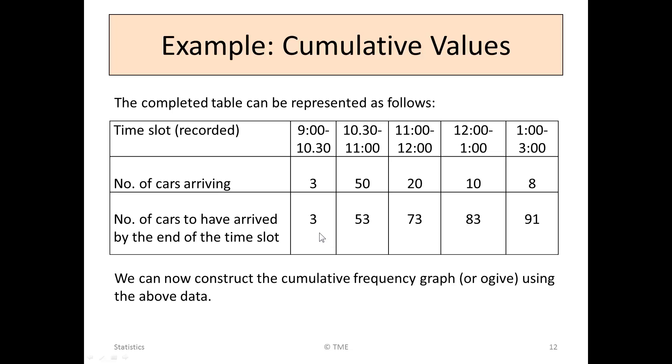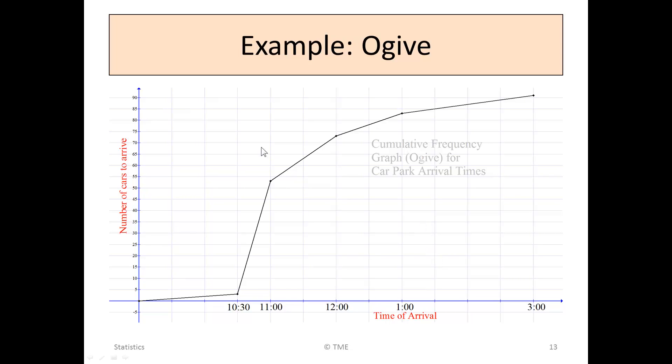Just to note the numbers. By 10:30, we have 3 cars. By 11, we had 53. And by 12, we had 73. Here's the graph. On the bottom, we've got the time axis, starting at 9, then 10:30, 11, 12, etc. And then, the number of cars to have arrived. By 10:30, we are showing just 3 cars have arrived. By 11 o'clock, that's our 53. And by 12 o'clock, we're up at 73. We just plug in the data from our graph as we received. By 3 o'clock, all the cars, all our 91 cars, have been entered. And at the start, when no cars had arrived, it was 9 o'clock. We had no data for that.